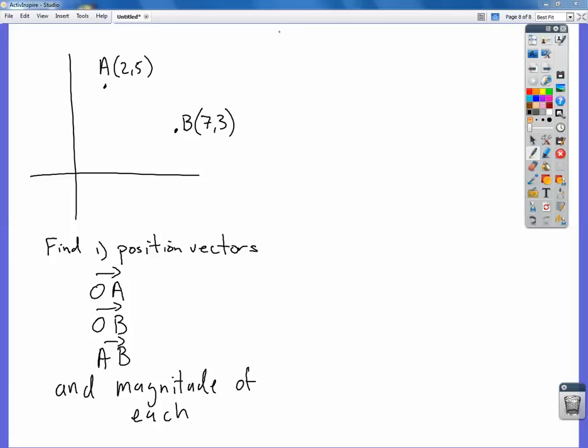If you look at the question here, we're trying to find the position vector of O to A. This is X and this is Y, of course. The position vector OB and the vector from A to B and the magnitude of each.